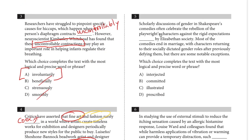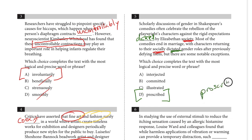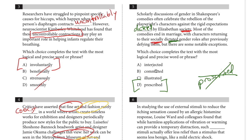Number five: scholarly discussions of gender in Shakespeare's comedies often celebrate the rebellion of the playwright's characters against the rigid expectations blank by Elizabethan society. Most comedies end in marriage with characters returning to their socially dictated gender roles. Society dictates the roles — they are prescribed, like a doctor prescribes medication. Keep in mind that 'prescribed' is not the same as 'proscribed,' which means prohibited. Think about the word that goes in the blank and that will lead you there.